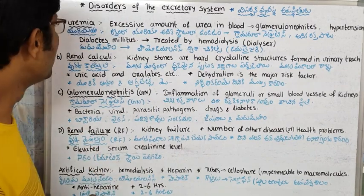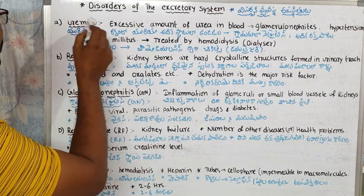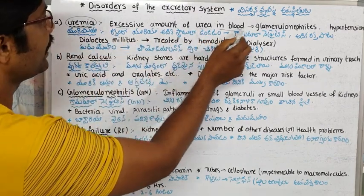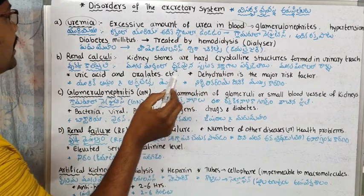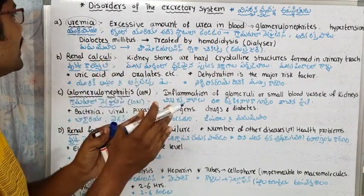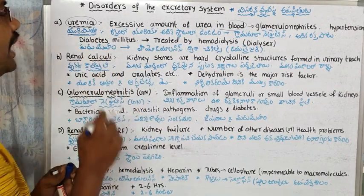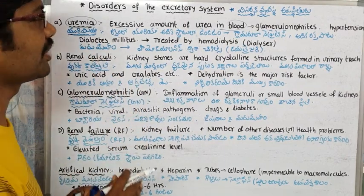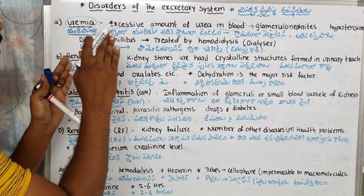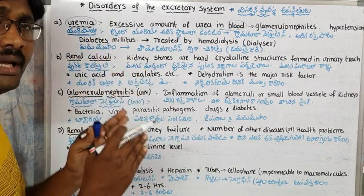First, uremia. Uremia is about the excessive amount of urea in the blood. If urea is excessive, then uremia begins, and there are problems associated with it.